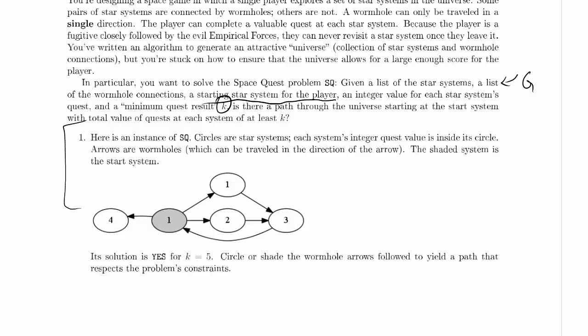Let's go ahead and shade them, since I've got this handy-dandy highlighter. We're going to have to start at the start system that is built into the problem. The problem says we're supposed to travel through star systems and accumulate a total of at least 5 points of quest value. So actually, there's a lot of ways to do this.